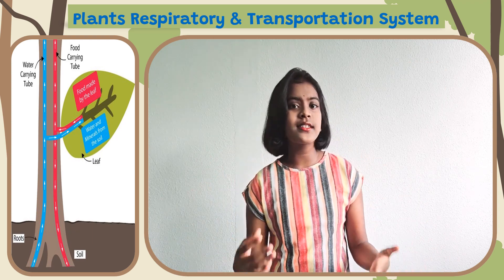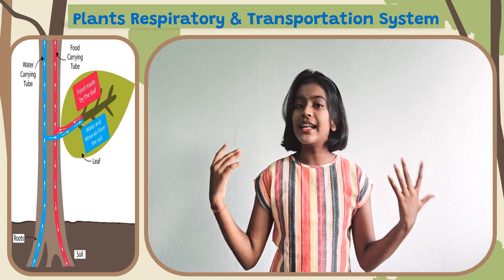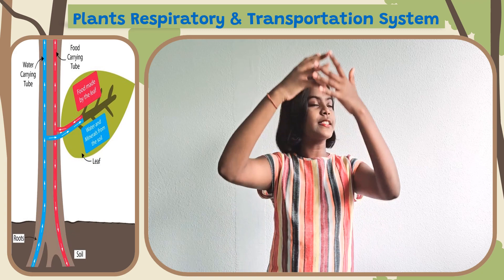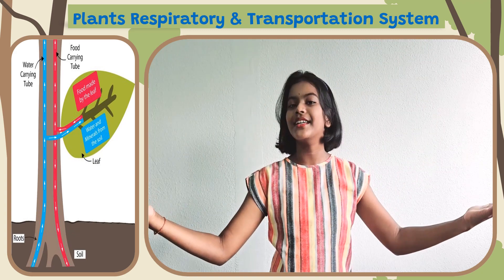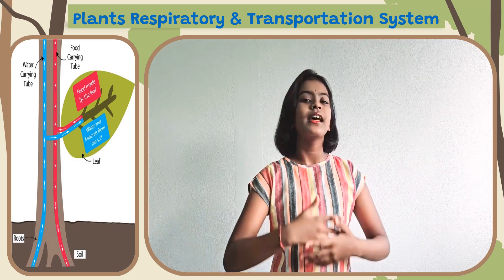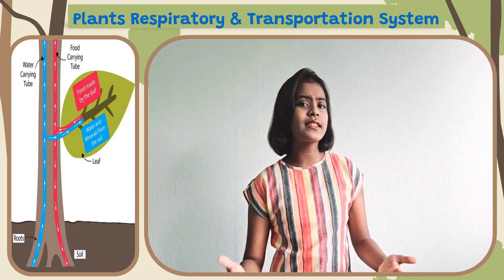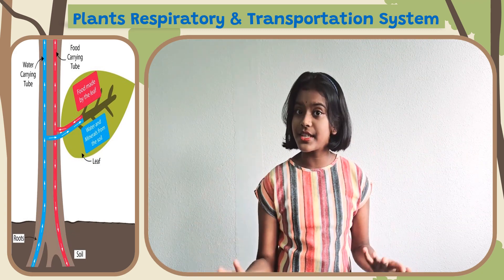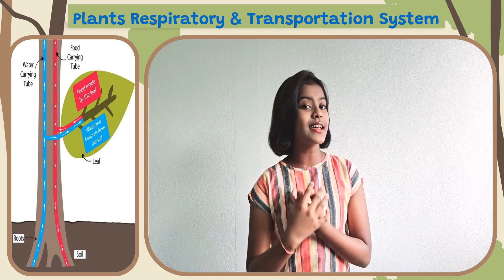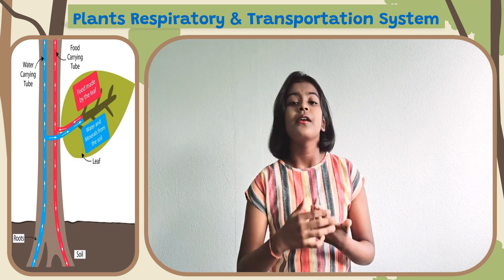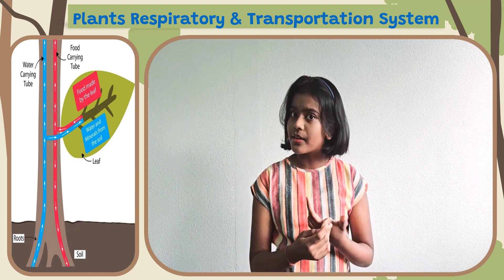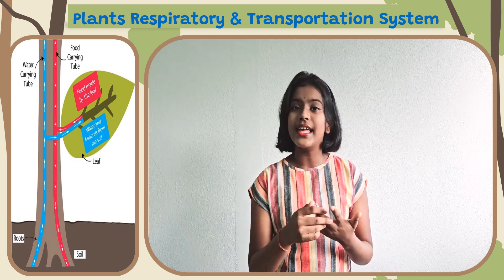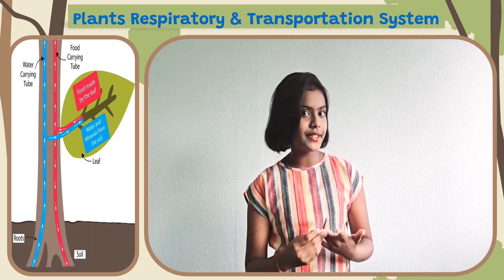Photosynthesis can only be done under the presence of sunlight. Chloroplast makes food for the plant using sunlight, water, minerals, and carbon dioxide.